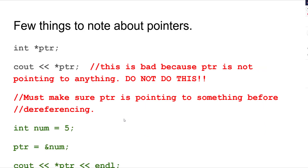A few things to note about pointers: once you start with pointers, there are lots of chances for errors — you have to be very careful. int* ptr declares a pointer with nothing in it, so if you try to output *ptr it's going to crash because ptr is not pointing to anything yet. We must make sure ptr is pointing to something. int num = 5, then ptr = &num says ptr is now pointing to num. Then cout << *ptr will print 5, because we have dereferenced ptr using the asterisk operator.